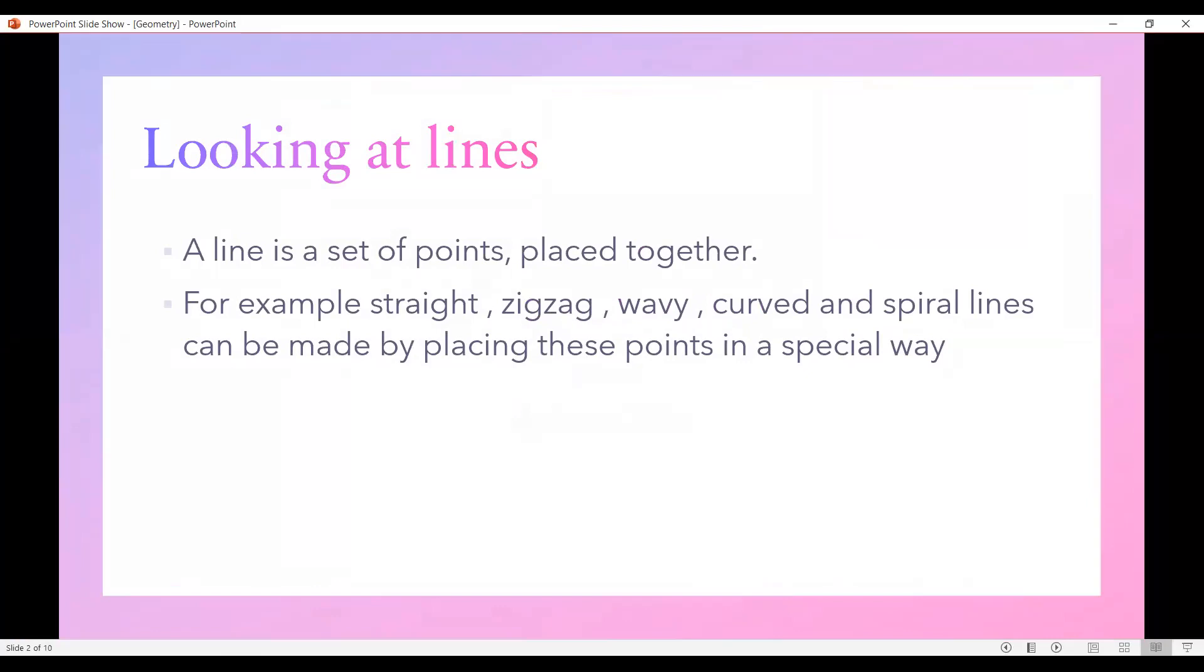A line is a set of points placed together. For example, straight, zigzag, wavy, curved and spiral lines can be made by placing these points in a special way.